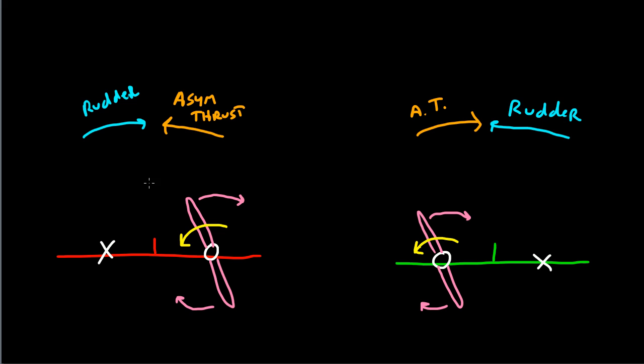Now, what happens? Well, in the case of the left engine failure, the torque tends to turn the airplane in the same direction as asymmetric thrust. That is to say, you need more rudder to oppose both asymmetric thrust as well as torque. In this case, torque works with the rudder to counteract asymmetric thrust.